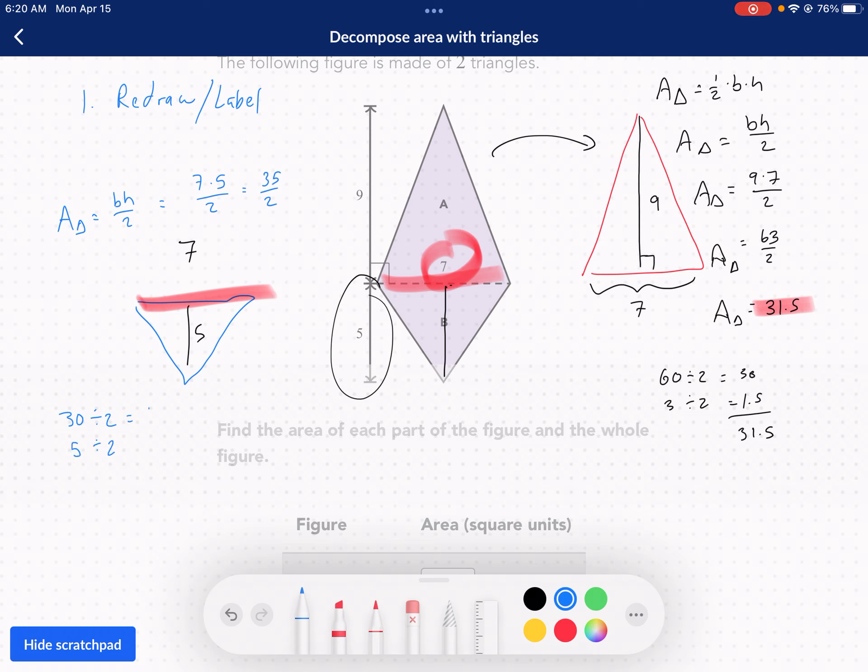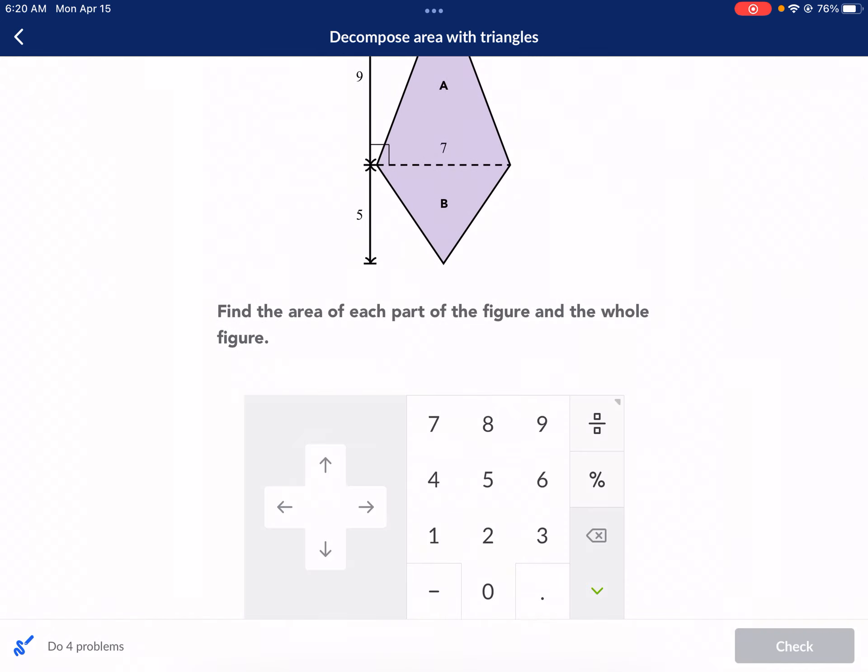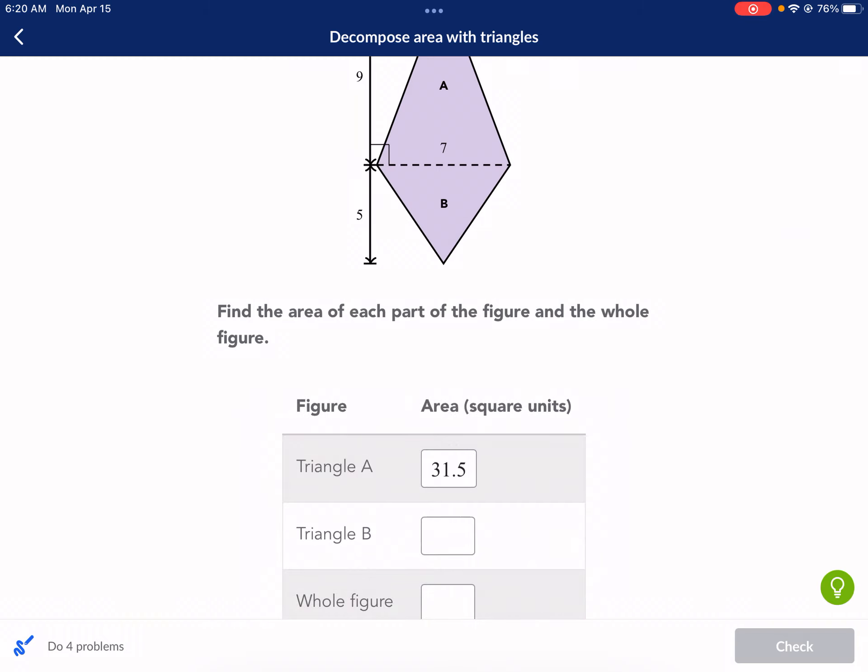I get 15. So, 15 goes into 32 times and then 2.5 goes into five twice. And I just need to add those two numbers and I get 17.5. So, I have 17.5 is my area of the blue triangle. So, I'm going to go ahead and type both these numbers in. So, I have 31.5 for triangle A, 31.5, and then 17.5 for triangle B.